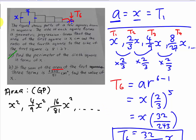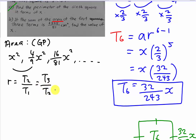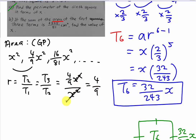From here, obviously you have to find out what R is. A is very obvious — A is x squared. R can be easily found by dividing the second term by the first term. So ratio equals T2 over T1 — or you can use T3 over T2, it's the same thing. If I use the second term, 4/9 x squared over x squared, I know my R actually equals 4/9 after simplifying. And my A is x squared.